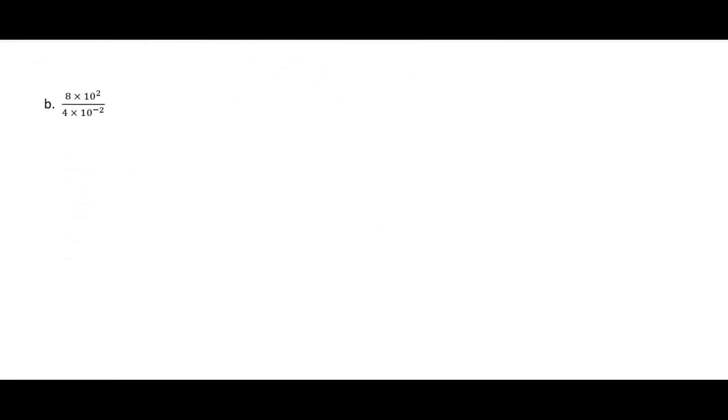This next one is division, but again, you have multiplication in the numerator. So it's like you have 8 times 10 to the second power over 4 times 10 to the negative 2. We're going to divide the 8 and 4, so that's going to give us 2. Then what's our rule for exponents? We have 10 squared over 10 to the negative 2. That's going to be 10 to the 2 minus a negative 2, or 10 to the 4th.